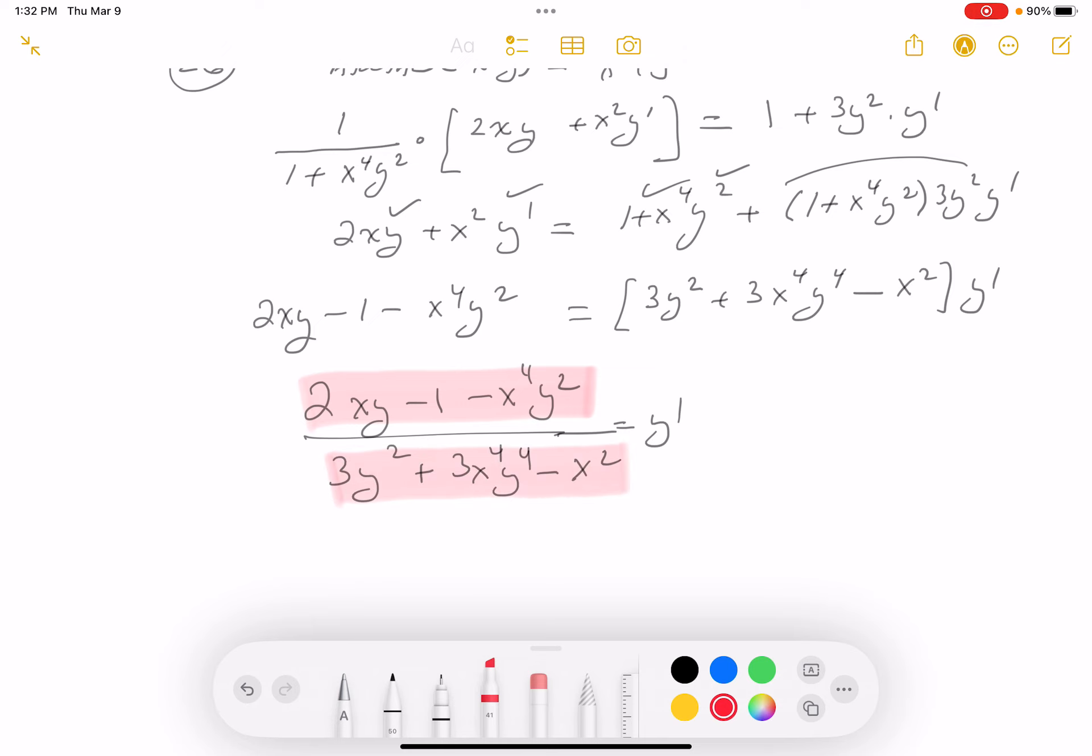Let's see, plus 3x to the 4 y to the 4. Yep, minus x squared. So I'm going to commit to choice B. Thank you.